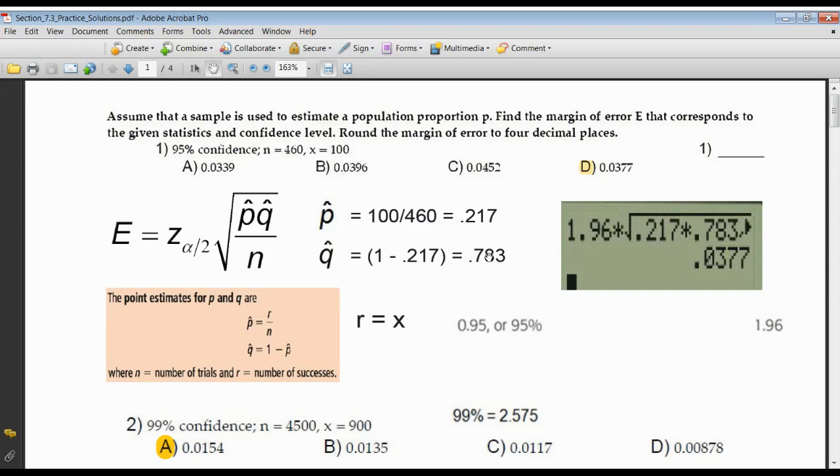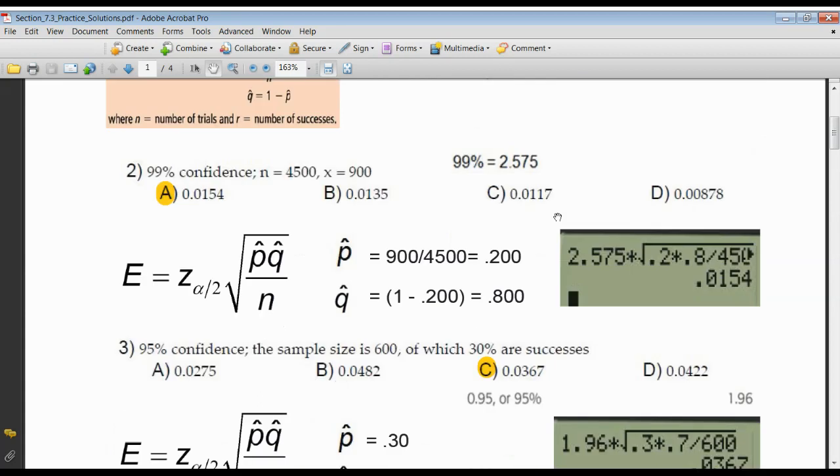After that, it's just plugging numbers into your calculator. The Z score associated with 95% is 1.96. There's your P hat, there's your Q hat. And once again, what you're not seeing is the division by N because of the limitation of the screen of the TI. All that being said, hitting enter 0.0377, and you can see it matches up exactly.